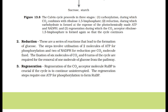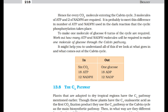The fixation of six molecules of CO2 and six turns of the cycle are required for the removal of one molecule of glucose from the pathway. 3. Regeneration: regeneration of the CO2 acceptor molecule RuBP is crucial if the cycle is to continue uninterrupted. The regeneration steps require one ATP for phosphorylation to form RuBP. Hence, for every CO2 molecule entering the Calvin cycle, 3 molecules of ATP and 2 of NADPH are required. To make one molecule of glucose, 6 turns of the cycle are required.